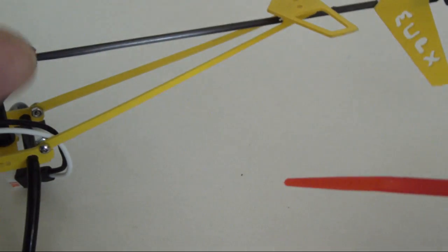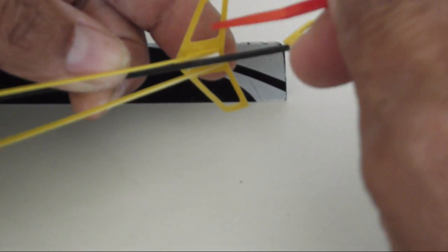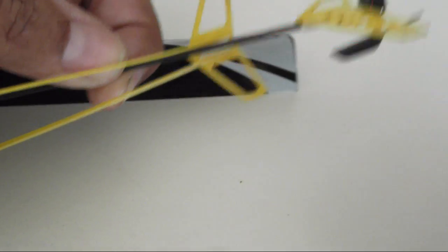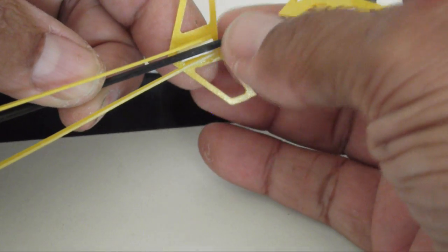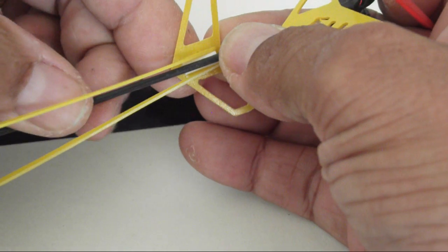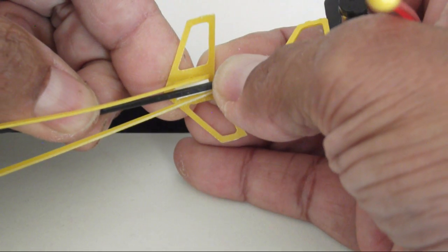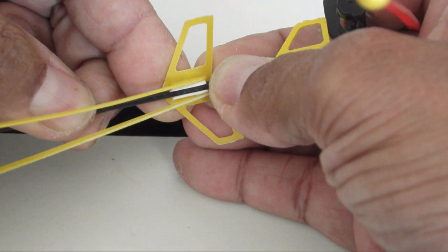The boom support gets attached by simply clipping or snapping on the horizontal fin with the slotted plastic part onto the boom. Do this gently and straight like that.